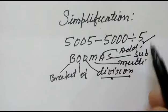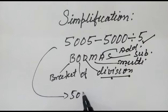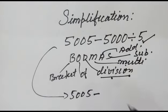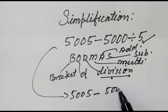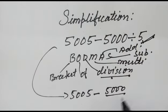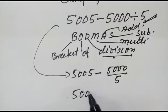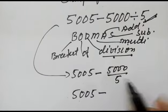5005 minus 5000 divided by 5, we can write like this: 5005 minus 1000.